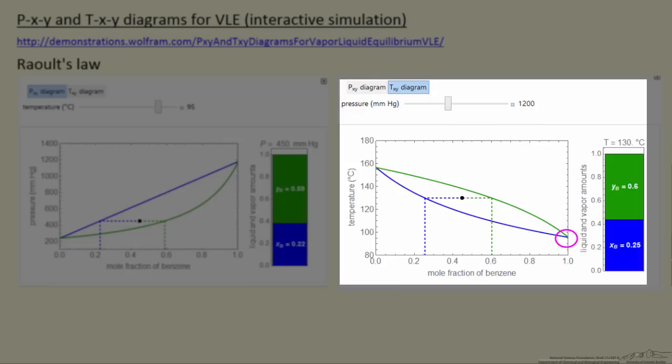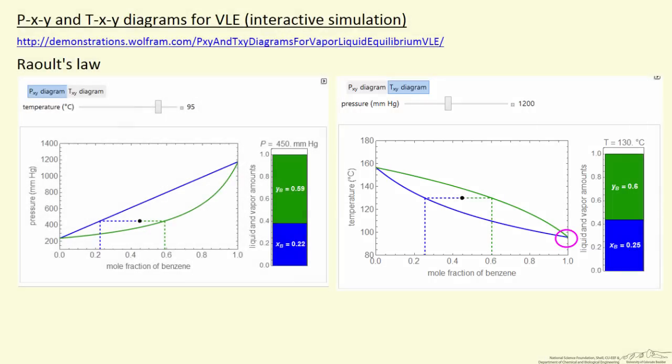And again, the bar graph on the right represents the relative fractions in the liquid phase and the vapor phase. So let's look at the simulation and see how, as we change temperature or pressure or move the black dot around, the various mole fractions and amounts in each phase change.